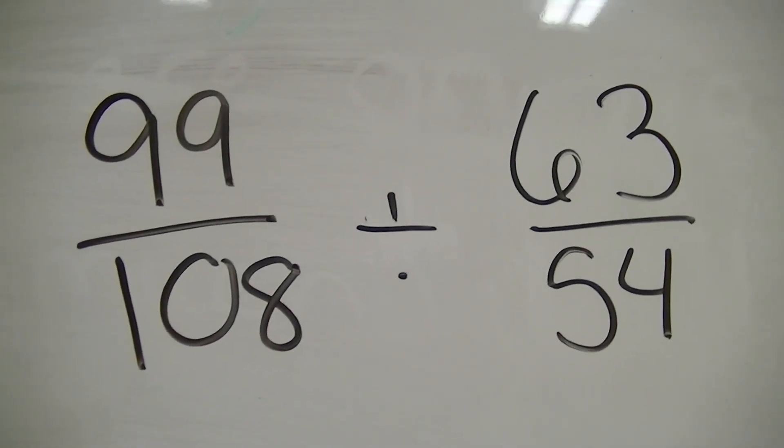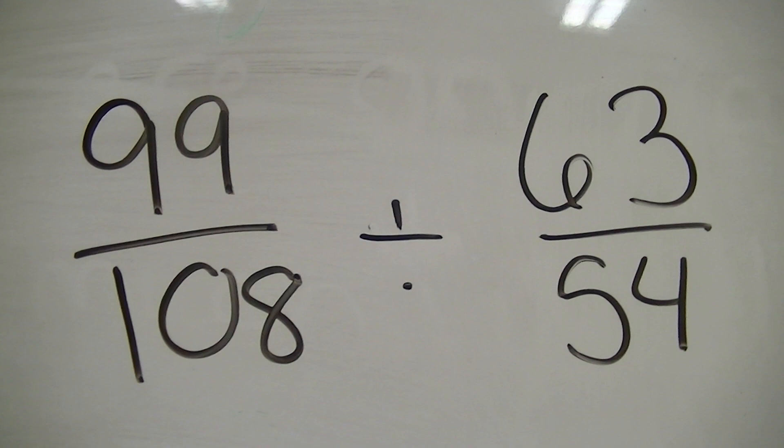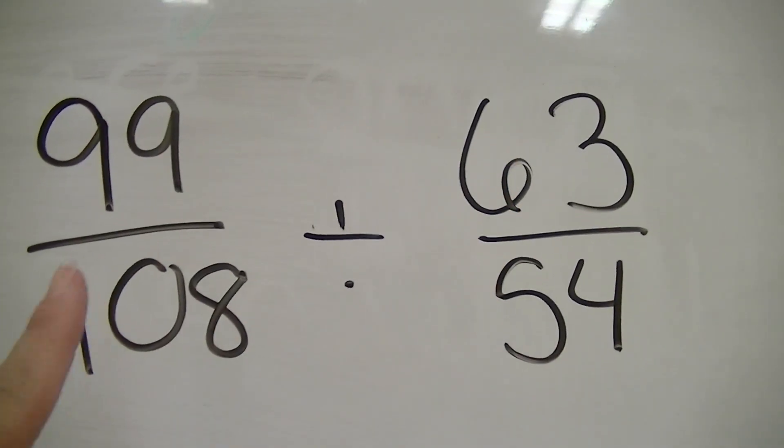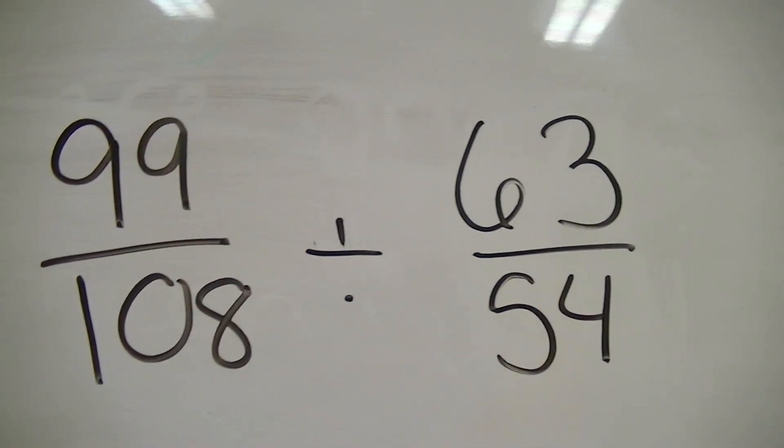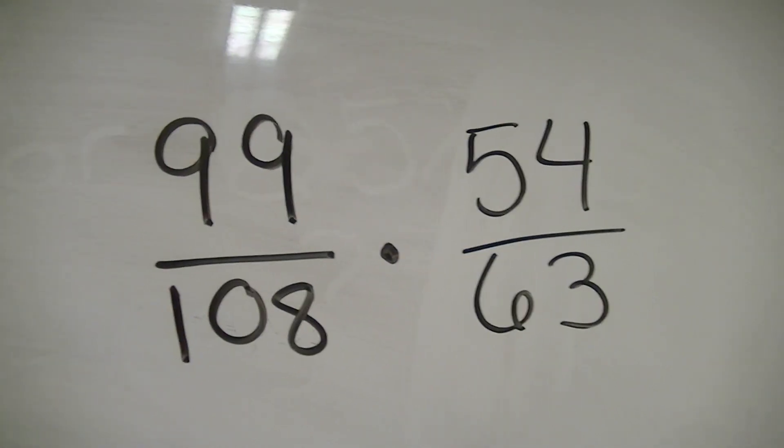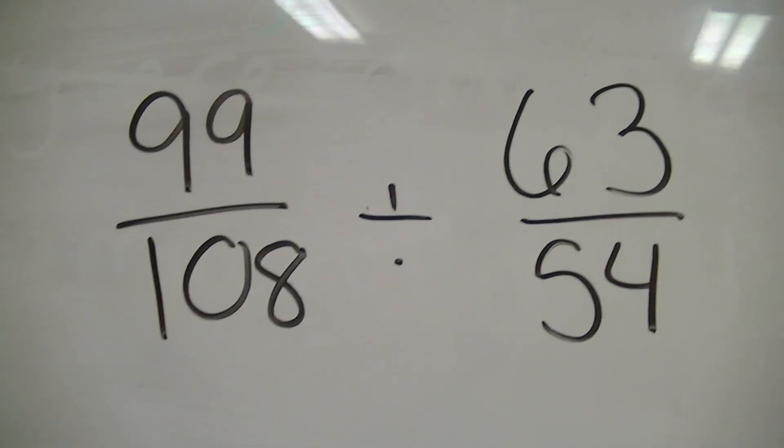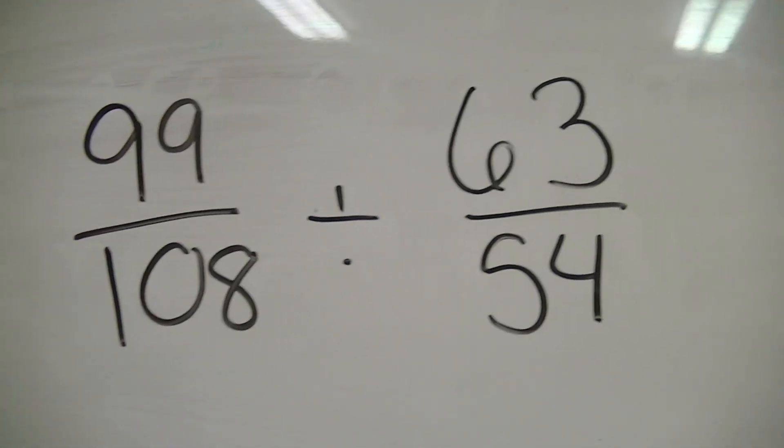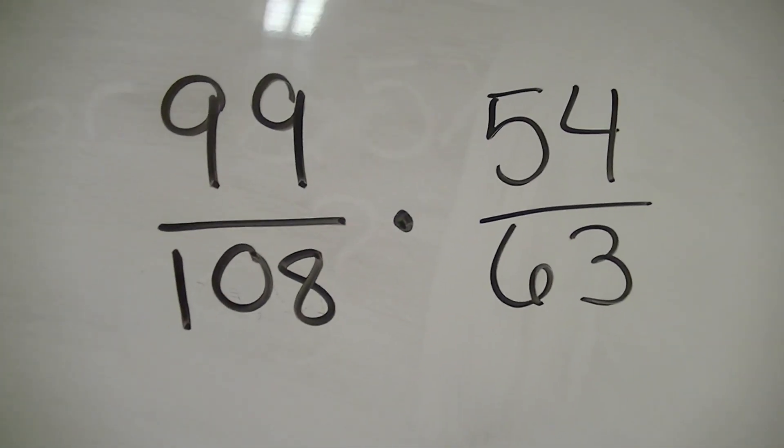First thing we have to do when we divide, we flip it. Always the second number, never the first. Always the second. So, that means that's going to just turn. 99 over 108, that's what it was there. It stays the same. What changes is 63 over 54 becomes 54 over 63.